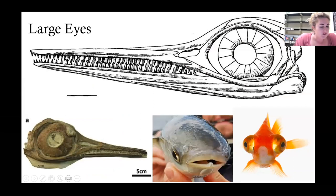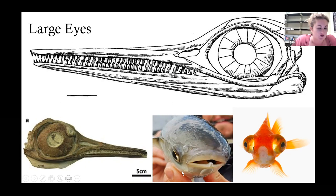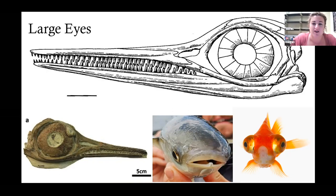One thing that makes ichthyosaurs really unique is their enormous eyes - they have the largest eyes relative to body size of any known vertebrate. In their eye sockets they have a sclerotic ring made of individual ossified curved plates, which would have held the eye rigidly in place. It's thought ichthyosaurs were extremely streamlined, so their eyes were probably flattened on the side like fish eyes - you'd want to look like this mullet rather than a goldfish with eyes sticking out when swimming as fast as possible.